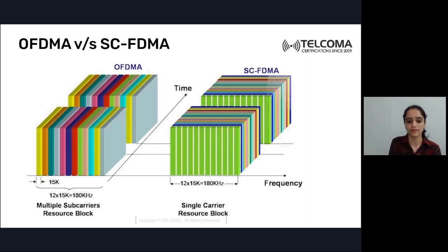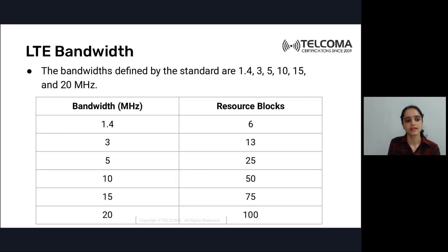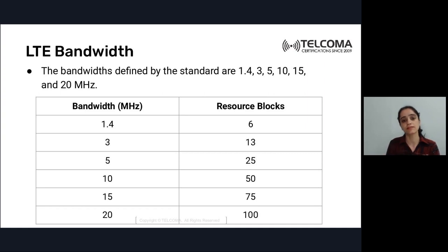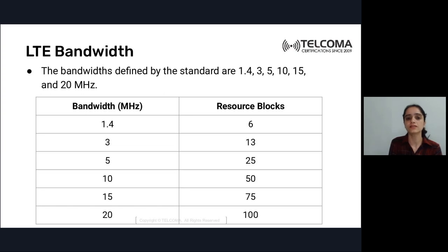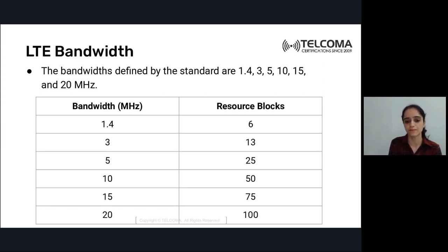The bandwidths defined by LTE standards are 1.4, 3, 5, 10, 15, and 20 MHz. The maximum bandwidth without carrier aggregation is 20 MHz, which gives 100 resource blocks. At 15 MHz you get 75 resource blocks, and at 10 MHz you get 50 resource blocks.